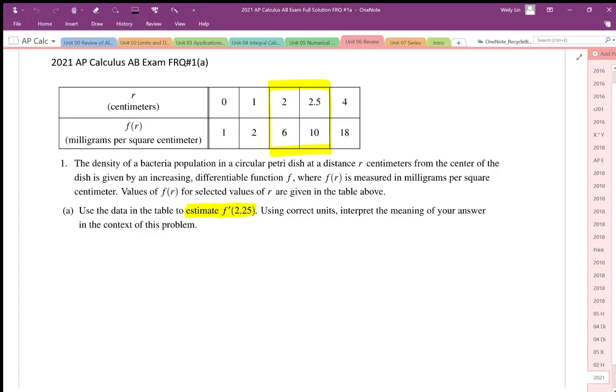In this case, at zero radius the density is one, at one radius centimeters the density is two, etc.